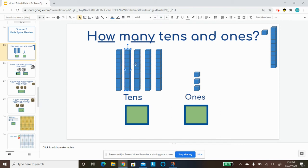One, two, three, four, five. We have five tens. We have one, two, three ones.